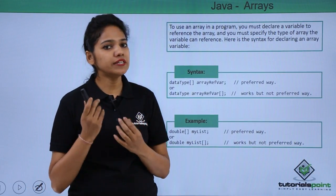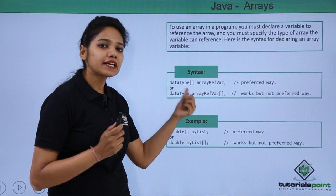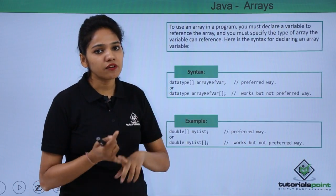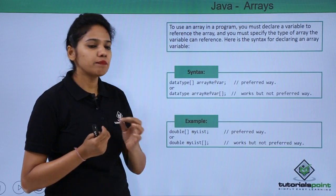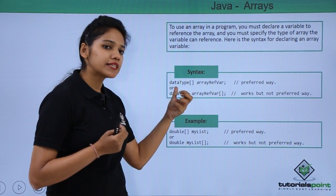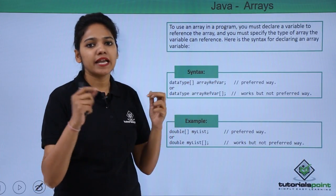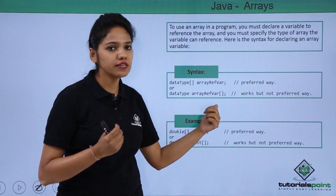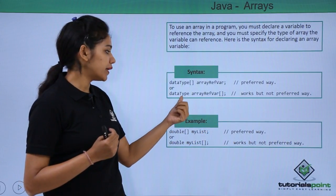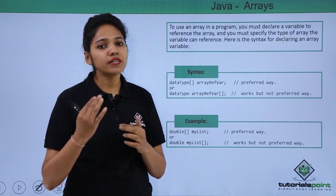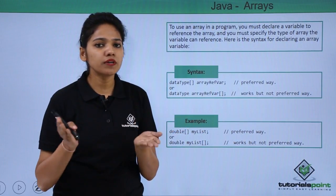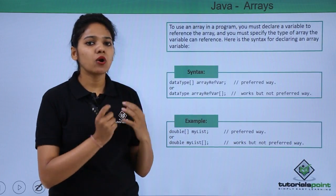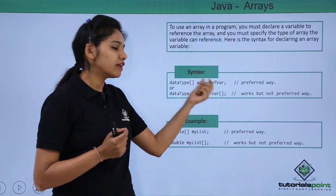How can we declare an array? We will see the syntax. You write the data type — the type of values your array will hold. Is it a double type? Is it a string? Is it integers? Once you provide the data type, you provide your array name, such as myArray, followed with a semicolon. The other way is to write the data type, array name, and then the brackets. There is no difference in execution; both work in Java. However, the recommended way is the data type, brackets, and then the array name.